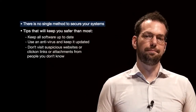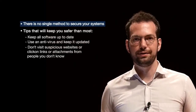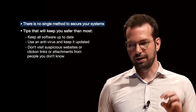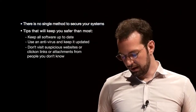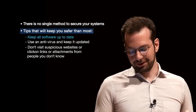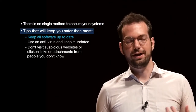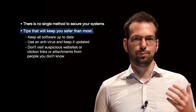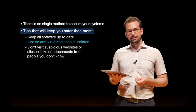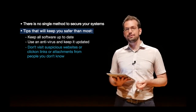There is no single method to secure your system — there are many technical methods as well as actions and behaviors to be aware of. If you do even basic things, the chance of being attacked goes down significantly. Tips that will keep you safer than most people: keep all software up to date, so hackers' known exploits won't work on your system. Use an antivirus and keep it updated. And don't visit suspicious websites or click links or attachments in emails.